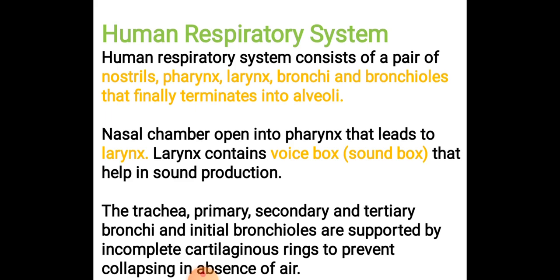Now let's discuss the human respiratory system. There are different types of organs which together make up the human respiratory system: a pair of nostrils, pharynx, larynx, trachea, bronchi, bronchioles, and finally the alveoli. These are the respiratory organs which make up the human respiratory system, and each organ has its own role.